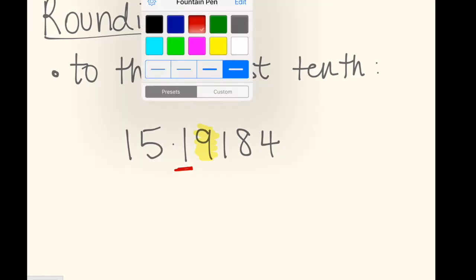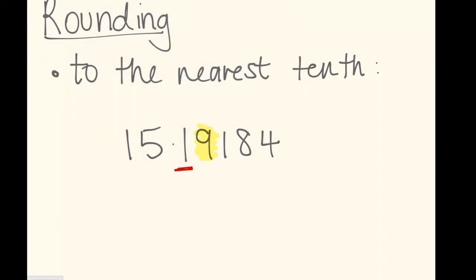So I need to round this off to the nearest tenth. Because that nine is five or more, I need to add one to that one in the tenths place. And this will be 15.2. And I'm just going to use a squiggly equal sign because that's approximately — that's the sign used for rounding numbers.